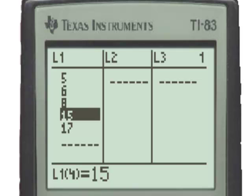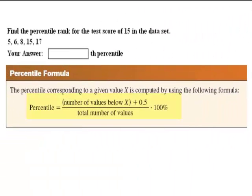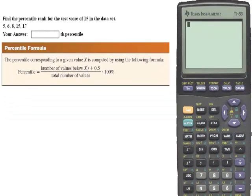There are three numbers below 15 and following the procedure we will add 0.5 to the number 3 corresponding to the three numbers below the number 15. So now we will take 3 and add 0.5 to give us 3.5.